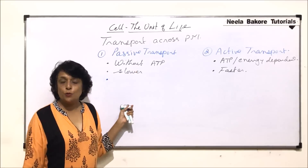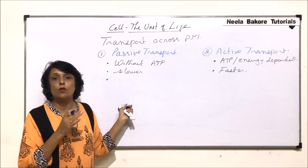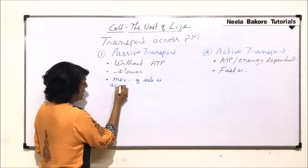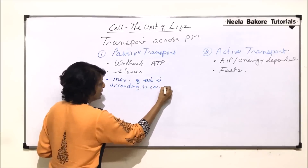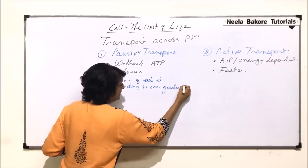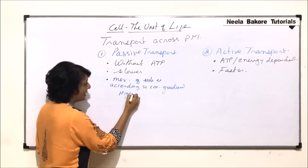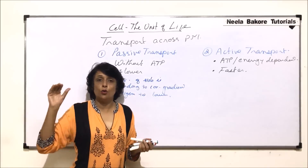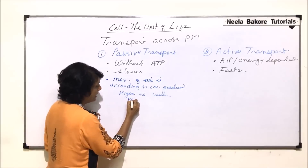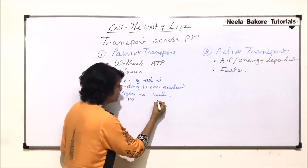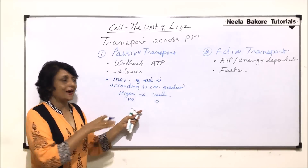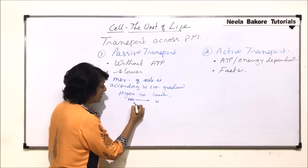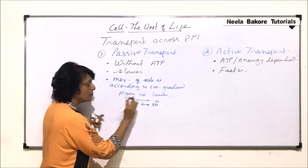In passive transport, the movement of substances takes place according to the concentration gradient — that means from higher to lower concentration. For example, if one area has 100 molecules and the other has none, particles start moving toward the lower concentration area. This continues until we get 50 molecules in both areas.